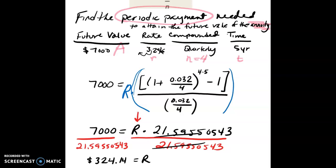That is what R is equal to. So this divides out, leaves you with just R. Here's my periodic payment. That means that I make this payment four times a year for five years, and I have an interest rate of 3.2%, I will end up with a future value of $7,000 after the five years. Thank you.